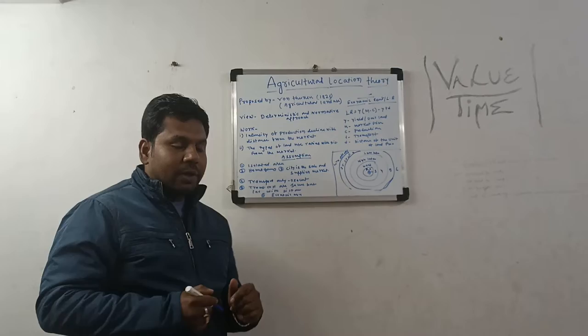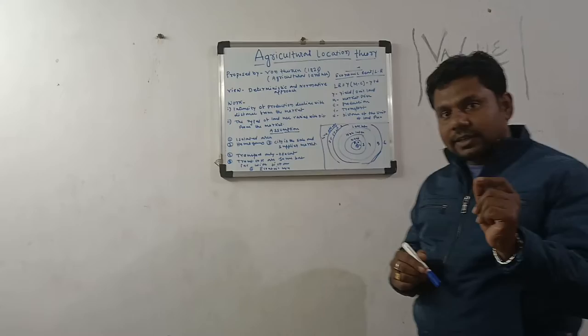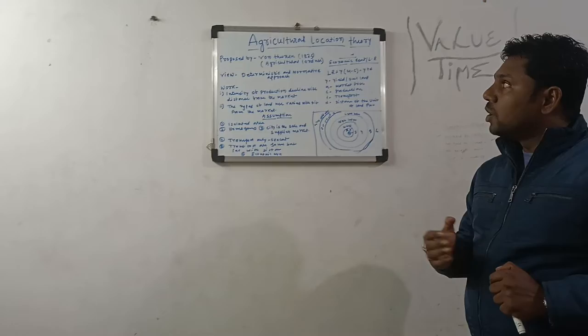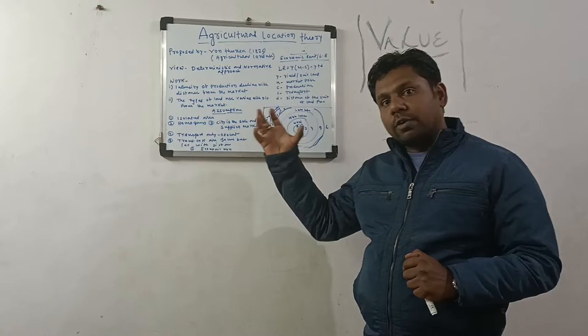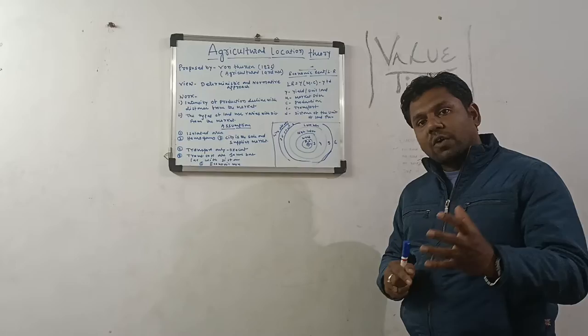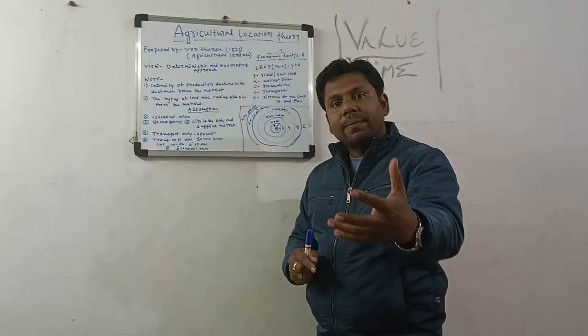This video is on agricultural location theory. Von Thunen in 1826 published his concept in an isolated state book. He experienced this in his German country for 40 years before publishing. This concept is basically about farmers because farmers have a goal of maximum economic profit.